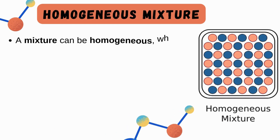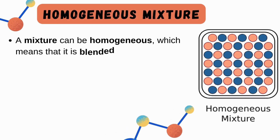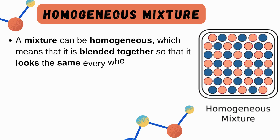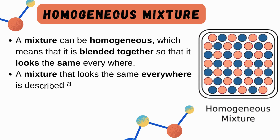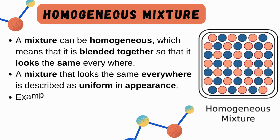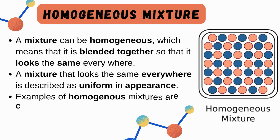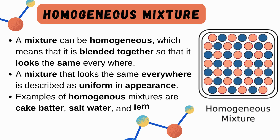Homogeneous mixtures are blended together so that they look the same everywhere — they are uniform in appearance. Examples are cake batter, saltwater, and limeade. In this example, the particles are evenly distributed and form a pattern, so any sample you grab would look relatively the same.